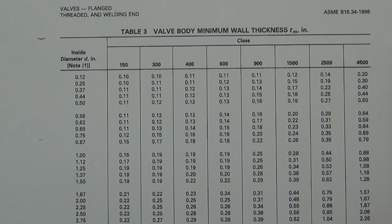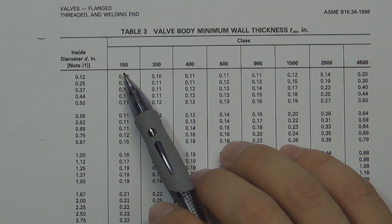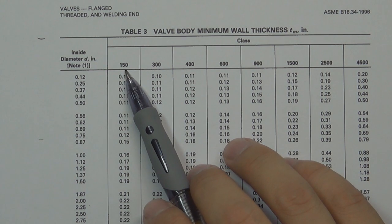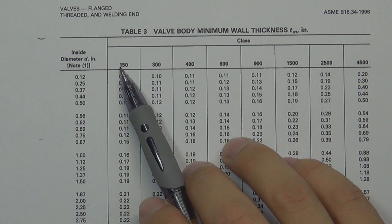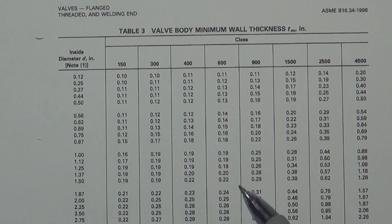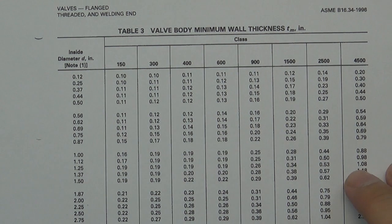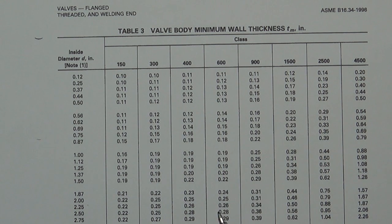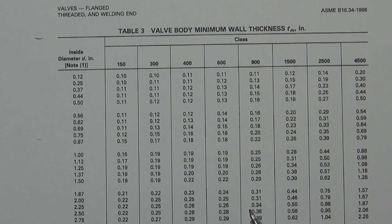But I have a question: why didn't we put the unit behind the class number? For example, why don't we say '150 psi'? So the question is: when you are using this table to design a 2-inch class 150 valve, do you think the valve can really hold exactly 150 psi inside? That is the question we are going to talk about next.